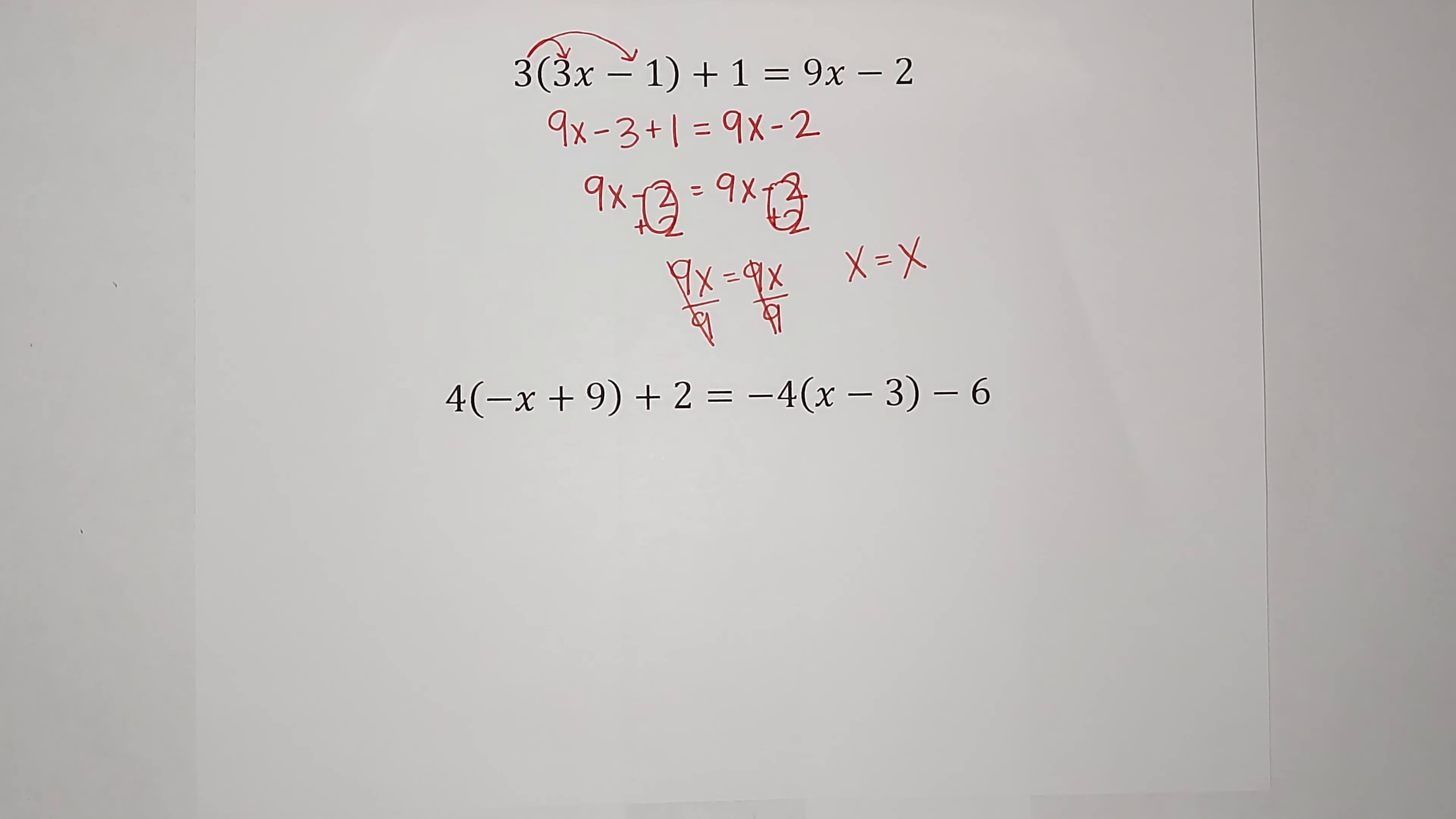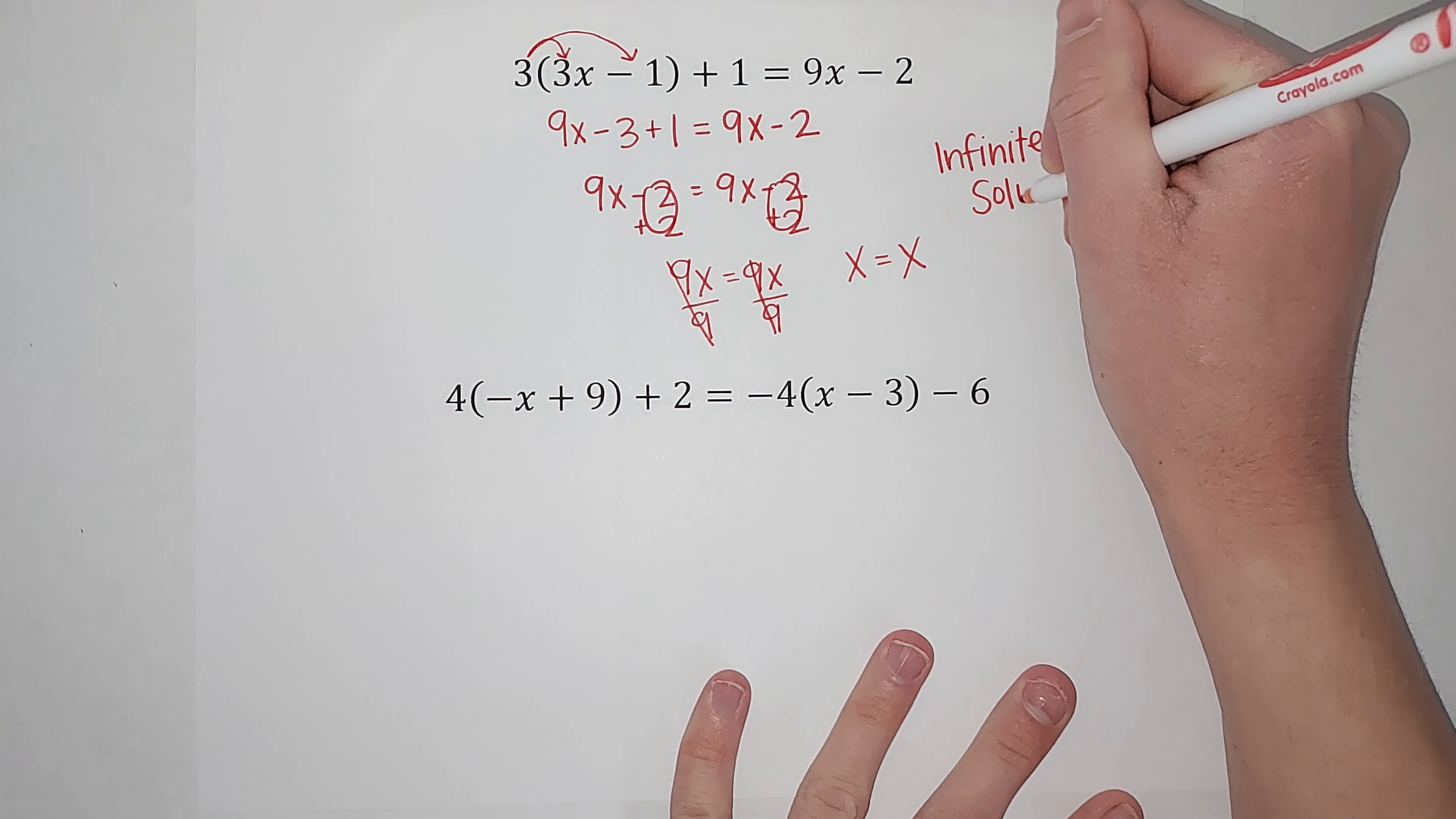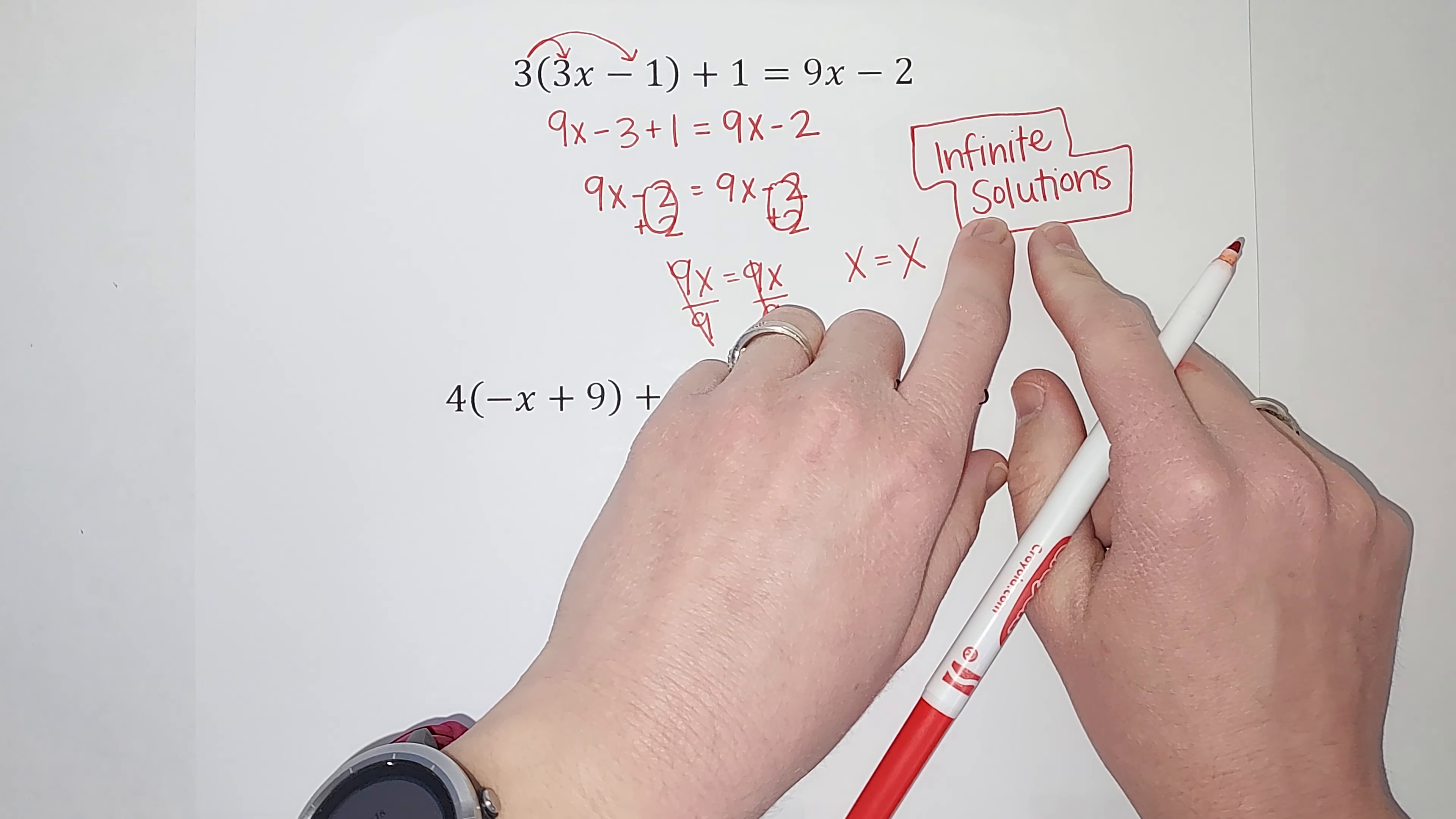What does that mean? That means there are infinite solutions, which means you could plug in any number for x and it'll work. What? That's exciting. So when you have a funny equation where you end up with something like this, it might not always be x equals x. You might get like 4 equals 4. If you get something that's true, infinite solutions.